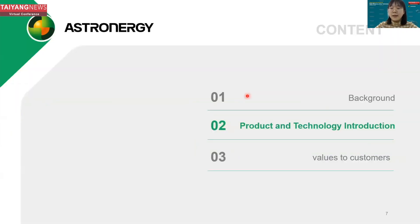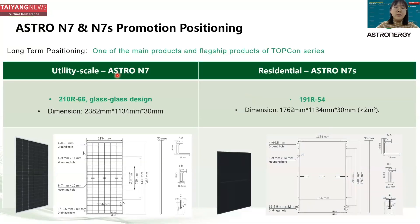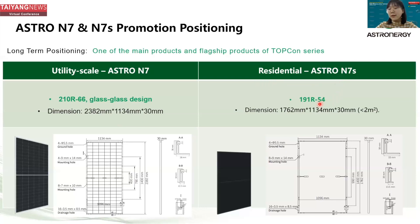In the second section, I will introduce our rectangular wafer modules for both utility scale and residential application. For utility scale, we have Astra N7 in the format of 210 rectangular 66 with double glass design, with dimensions of 2382×1134×30mm. For residential application, we have Astra N7S in the format of 191 rectangular 54, with dimensions of 1762×1134×30mm, smaller than 2 square meters.